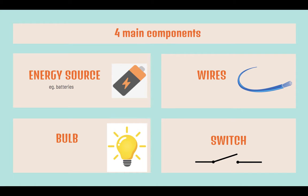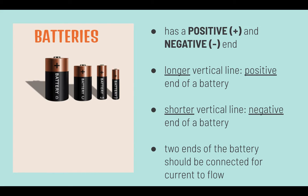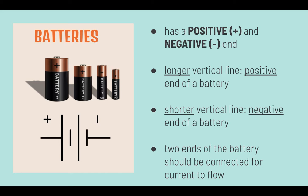We'll be zooming in on the energy source like batteries first. This is how a battery should be drawn in a circuit diagram. A battery has a positive and negative end. The longer vertical line represents the positive end, while the shorter vertical line represents the negative end. Both ends of the battery should be connected for current to flow.